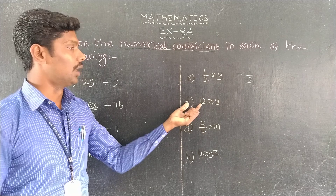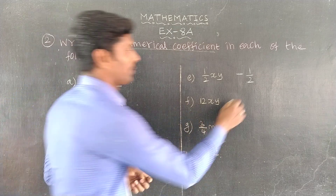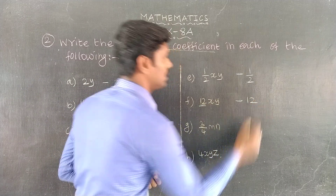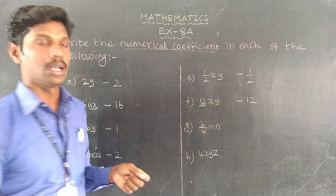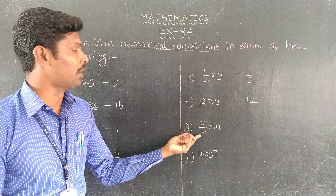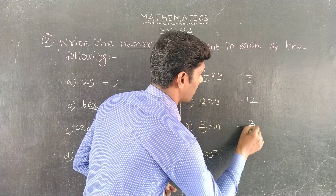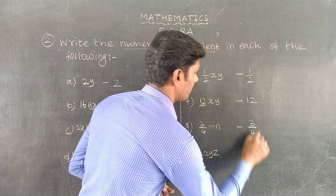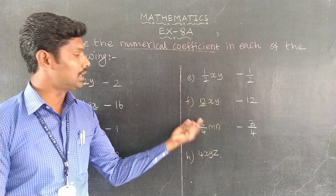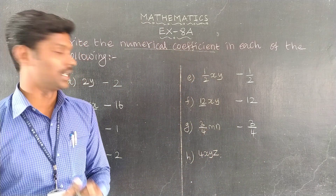Next, we have 12xy — this is a numerical coefficient. Next, 3/4 mn: mn is a variable, and 3/4 is the numerical coefficient.